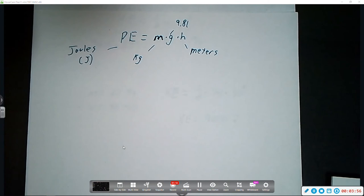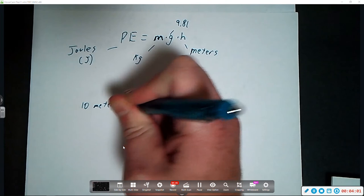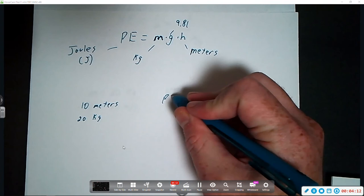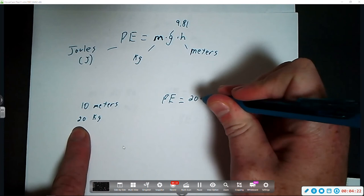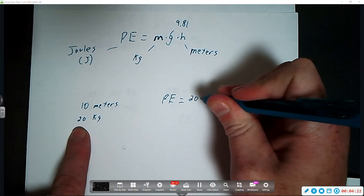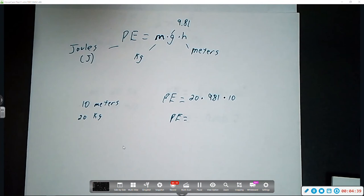Let's say we've got an object that is 10 meters off the ground, and it is also going to be 20 kilograms. We're going to plug that information into our equation. We're trying to find the potential energy, so that stays PE. That's our variable. Mass is 20. Our gravity is that constant, 9.81. And our height is 10 meters. Mass times gravity times height.